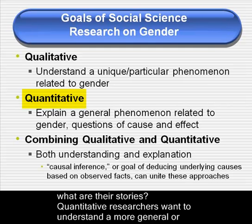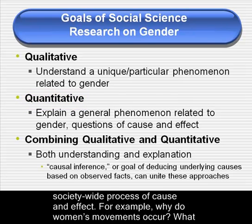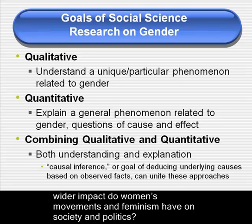Quantitative researchers want to explain a more general or society-wide process of cause and effect. For example, why do women's movements in general occur? And what wider impact do women's movements and feminism have on society and politics?